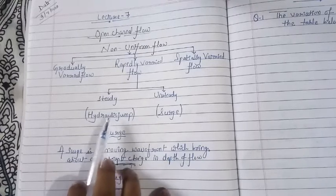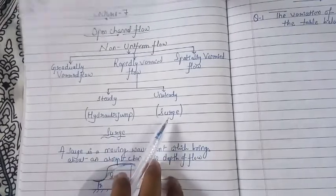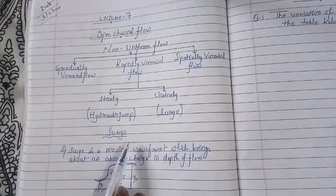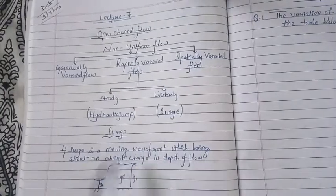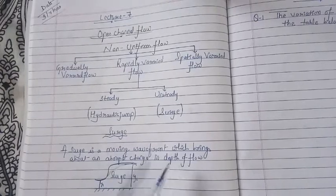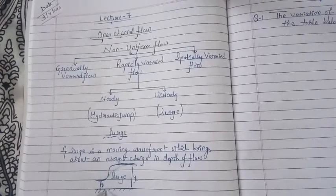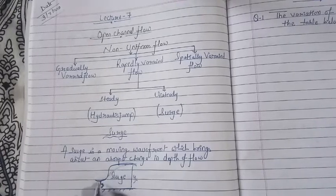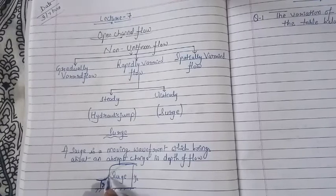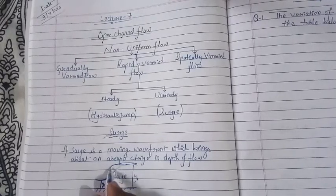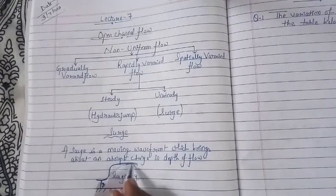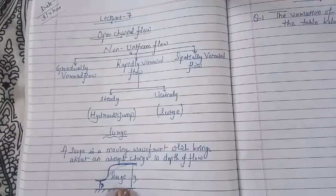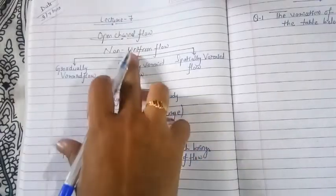We covered the hydraulic jump in detail in previous lectures. In today's lecture we are going to look at the surge. A surge is a moving wavefront which brings about an abrupt change in the depth of flow. If this is the surface of any channel and the depth is y1, and the flow depth changes suddenly or abruptly to y2, then this condition forms a surge — a condition of unsteady non-uniform rapidly varied flow.